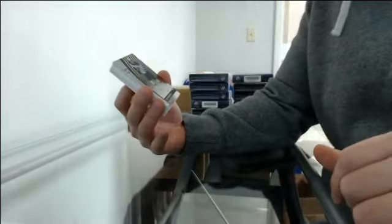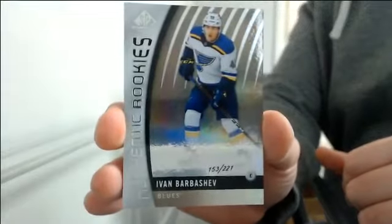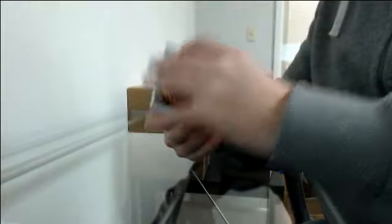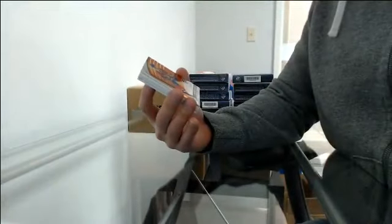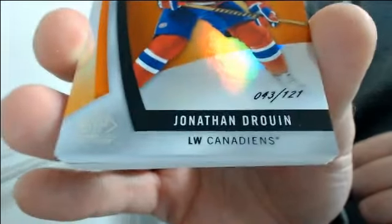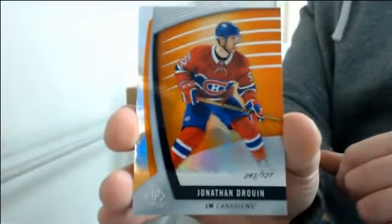Authentic rookie 153 to 221 going to St. Louis, Ivan Barbashev. Base 43 to 121 for Montreal, Jonathan Drouin.